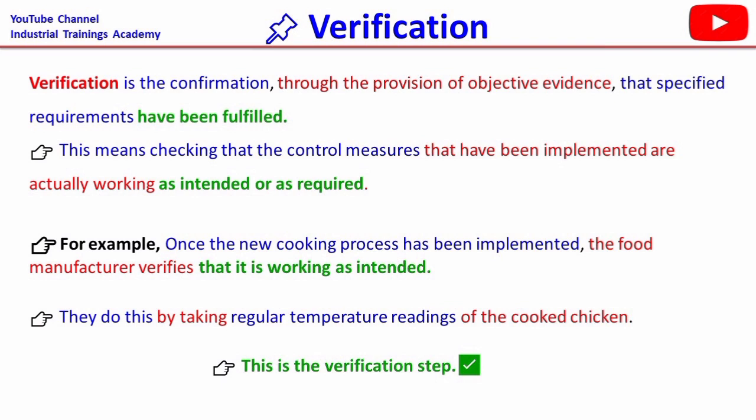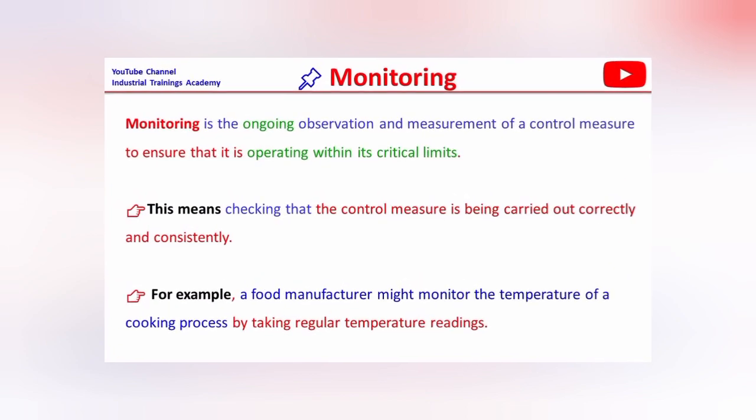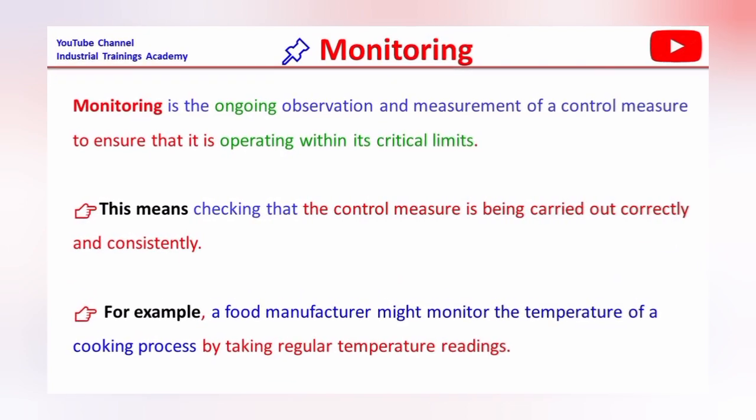This means checking that the control measures that have been implemented are actually working as intended or as required. For example, once the new cooking process has been implemented, the food manufacturer verifies that it is working as intended by taking regular temperature readings of the cooked chicken. This is called the verification step. Monitoring is the ongoing observation and measurement of a control measure.